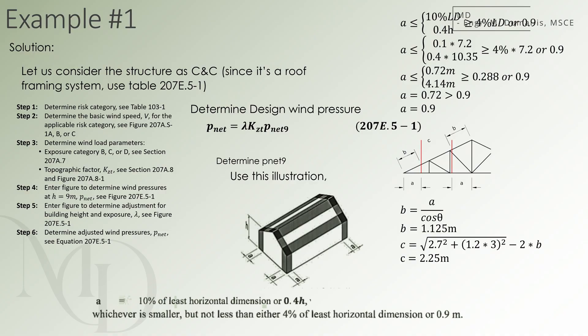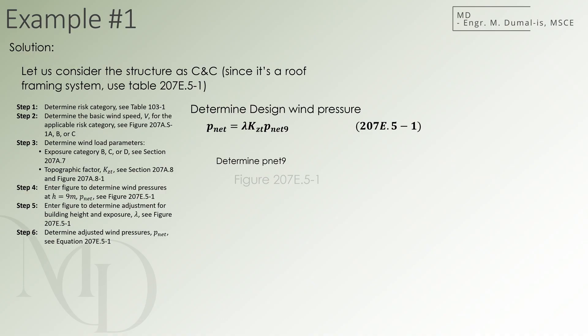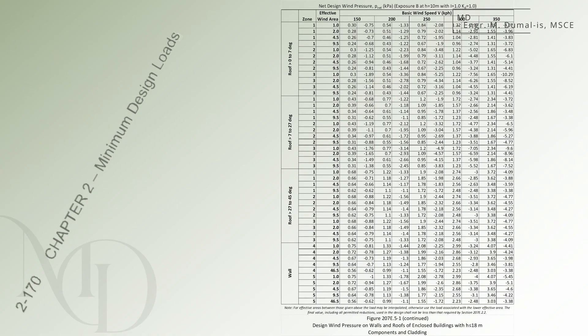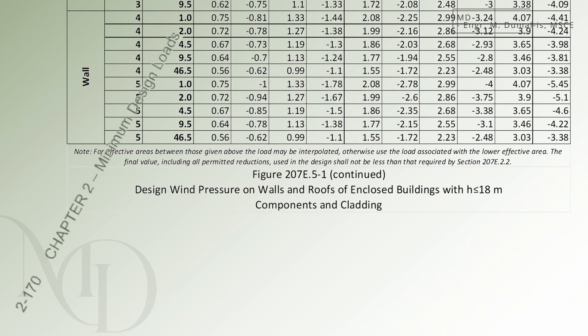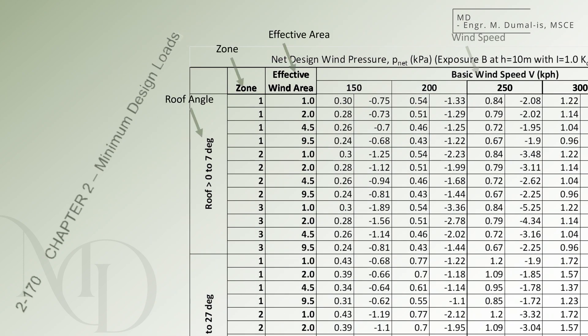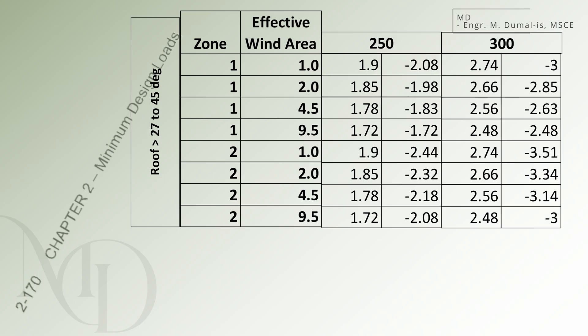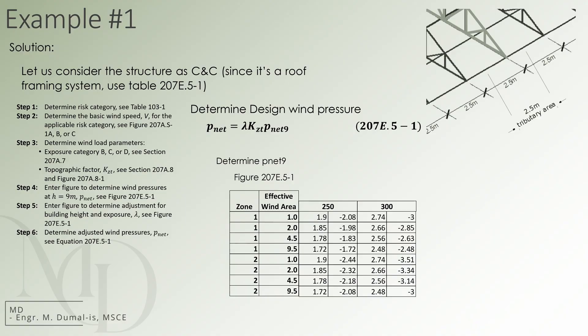We already have all given for PNET 9 calculations. We can now refer to figure 207E.5-1. And so here is the complete table. This table contains the design wind pressure on walls and roofs of enclosed buildings with mean roof height less than 18 meters for components and claddings. The table as shown is defined by the roof angle, zone, effective area, and wind speed. We already have most of the values except for the effective area. We trim the table and just show the portions we need.